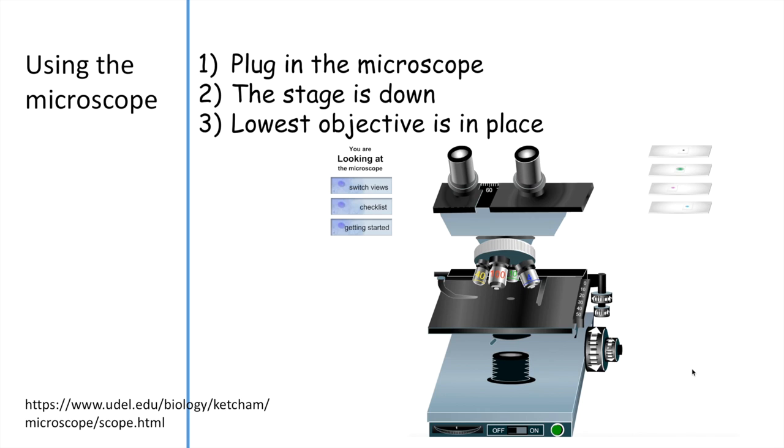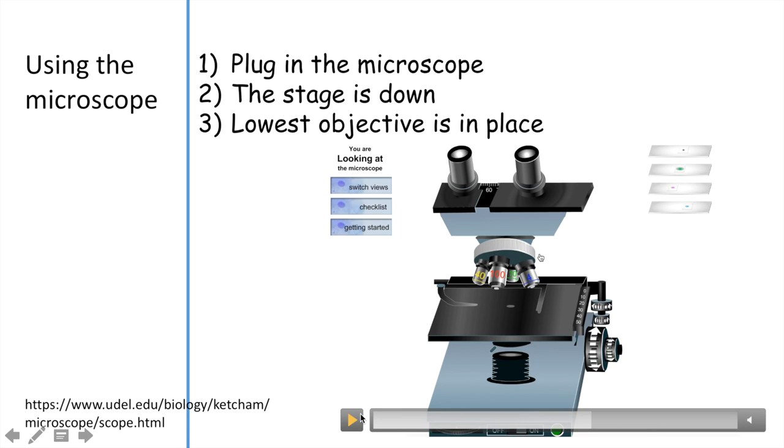You then want to make sure that the stage is down. Here we have our microscope, and this is the stage. You want to try to get familiar with the microscope that you're using because the coarse adjustment knob is located in different places. In our microscope, the coarse adjustment knob is located over on this side. You want to make sure that the stage is down by pulling it downwards. Now it's located at its lowest stage.